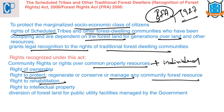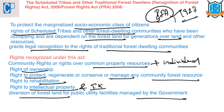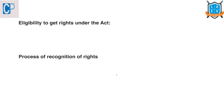It recognizes the right to intellectual property and the traditional knowledge that is related to biodiversity and cultural diversity. This act also provides for the diversion of forest land for public utility facilities managed by the government, like schools, dispensaries, fair price shops, electricity and telecommunication lines, and water tanks, with the recommendation of Gram Sabhas.